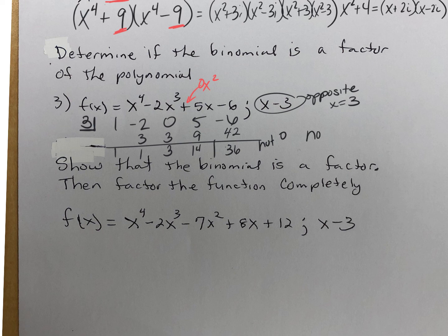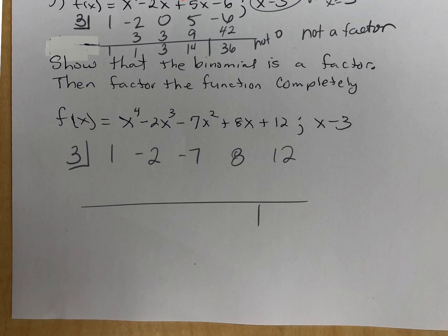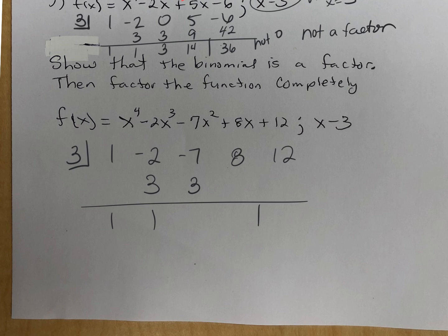The next one says show that it is a factor, so it should end in zero. We're going to show that and then factor what's left. Positive three goes in the box. Coefficients: one, negative two, negative seven, eight, and twelve — nothing missing. Bring down the one; 1 times 3 is 3; negative 2 plus 3 is 1; 1 times 3 is 3; negative 7 plus 3 is negative 4; negative 4 times 3 is negative 12 — wait, that's zero. So this part shows it is a factor.